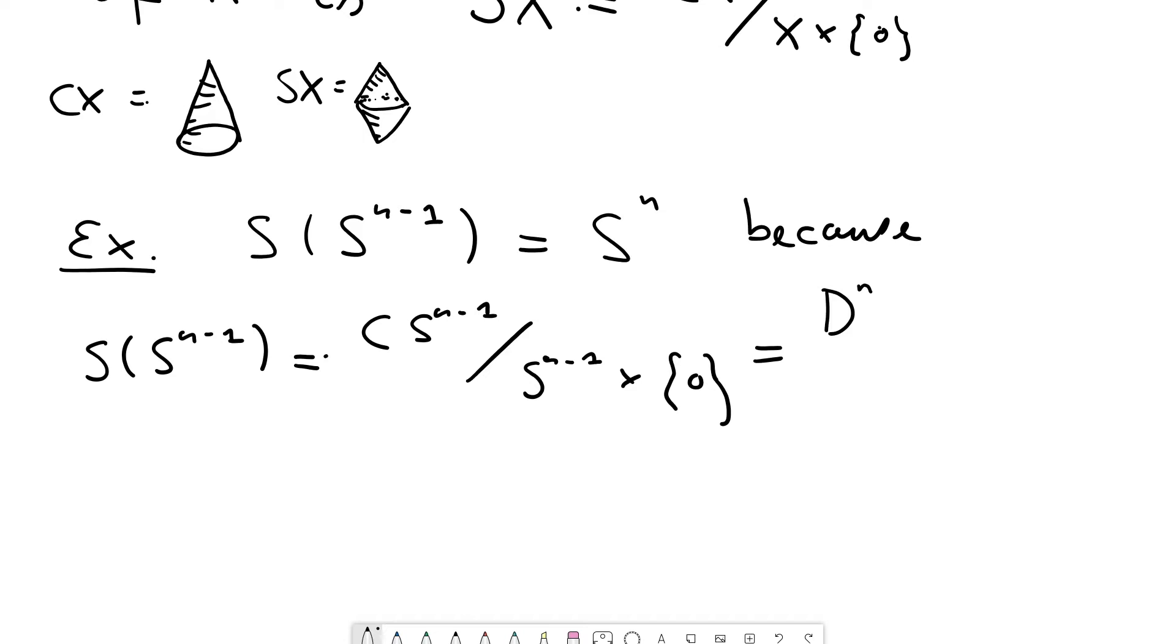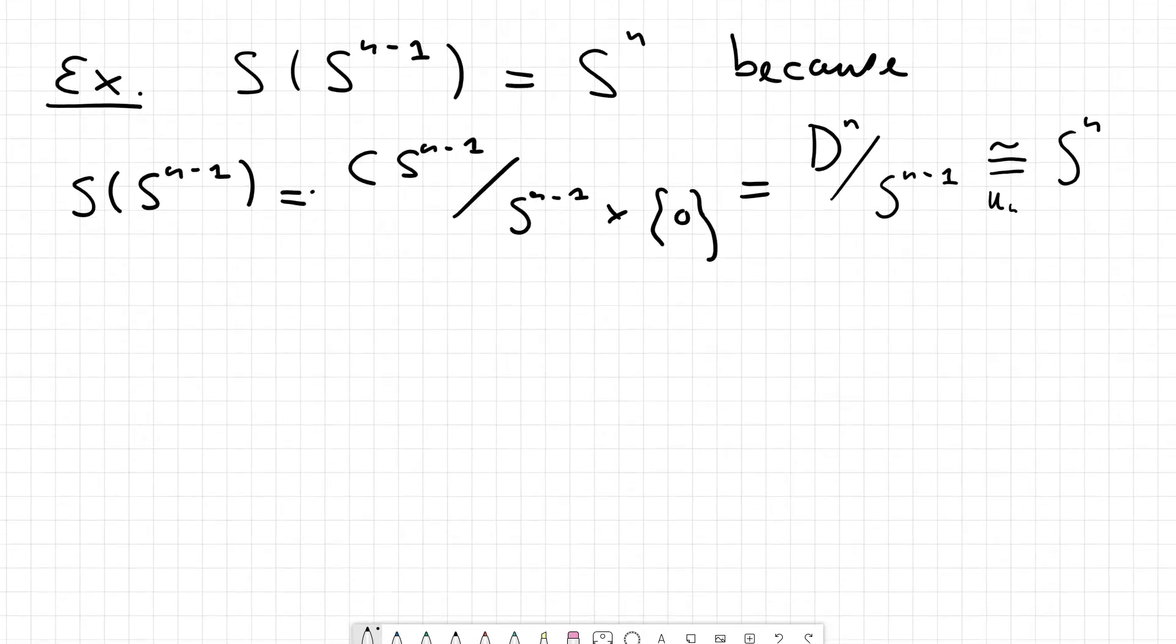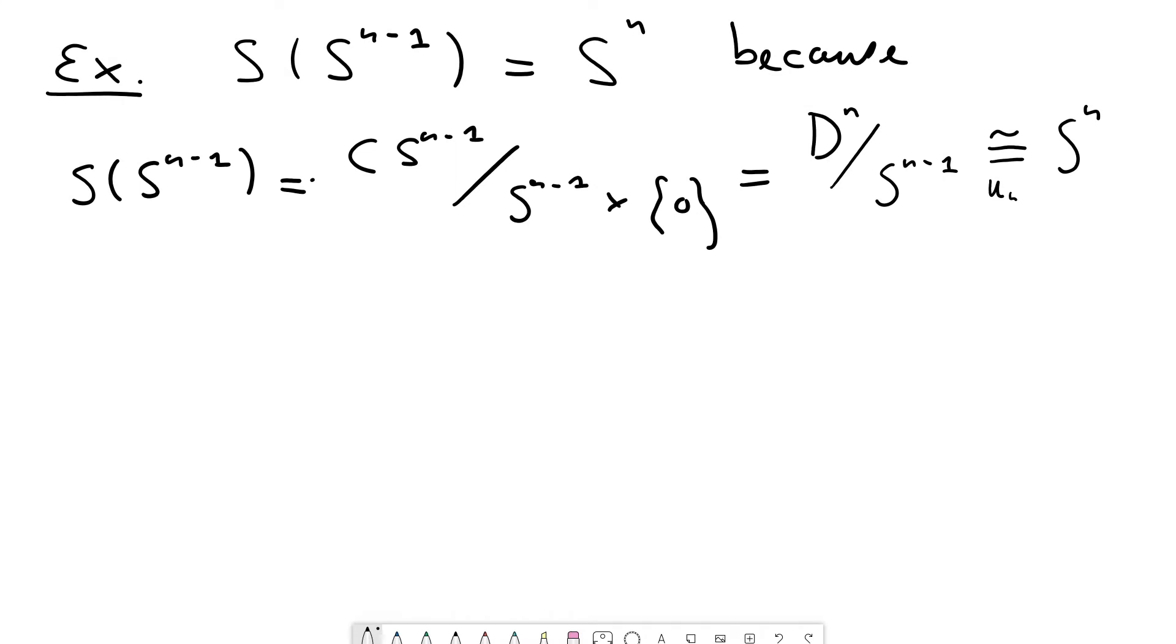And now you mod out from the n disk its boundary S^{n-1}. And that is homeomorphic to the n sphere. But I think it's important that one fixes once and for all such a homeomorphism so that there is no doubt left as to how to identify those two spaces. Let's call this homeomorphism u_n. And I think it already occurred at some point last semester. But nevertheless, let me describe you this homeomorphism concretely.